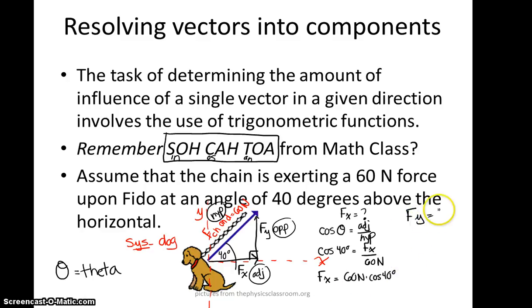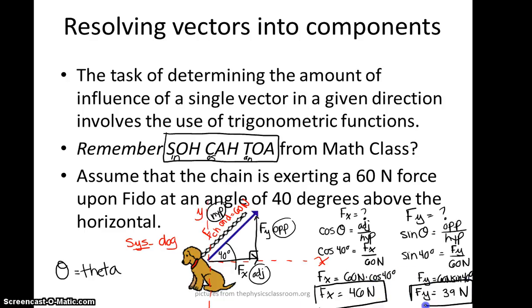If you wanted to solve for your y component, you'd be looking at the sine of that angle because the sine of the angle allows you to use the opposite side divided by the hypotenuse. And in this case, our opposite side is the y component. That would be divided by the given 60. And the Fy simply equals 60 newtons times the sine of 40 degrees. So let me just grab my calculator, and we can solve for both of these. And so it ends up being that our x component can be found as 46 newtons and our y component as 39 newtons.